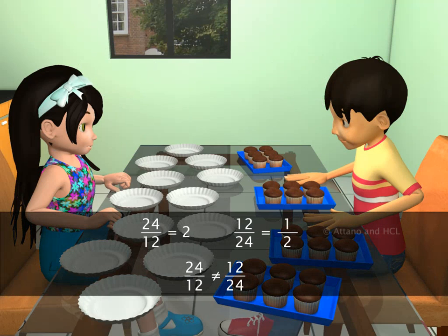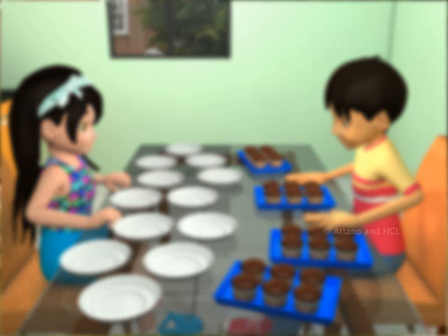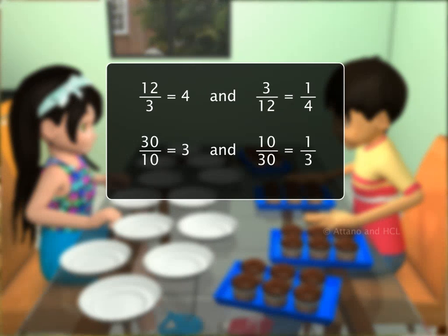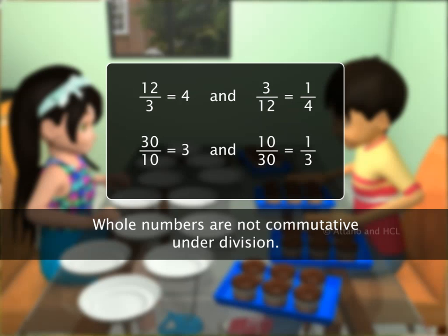As you can see, the result differs when the order of the numbers is changed. Here are a couple of examples. The division of whole numbers depends on the order in which they are placed. Hence, the commutative property cannot be applied to division.